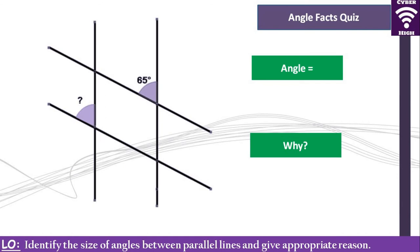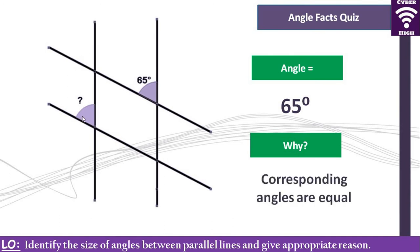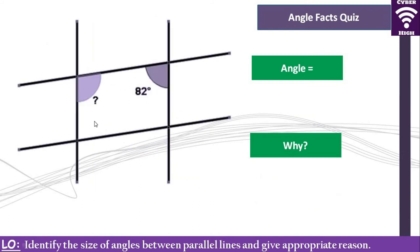Now let's look at a question with four lines — you need to find out how they relate. You have been given 65 degrees. This angle and the corresponding position angle are also 65 degrees because they are F angles. Then that 65 and the next angle are also F angles. You can say they are corresponding, and corresponding angles are equal.